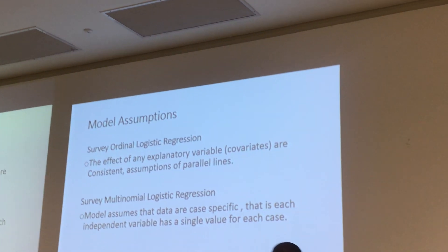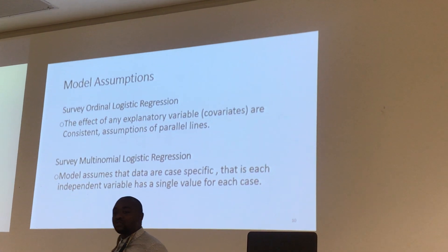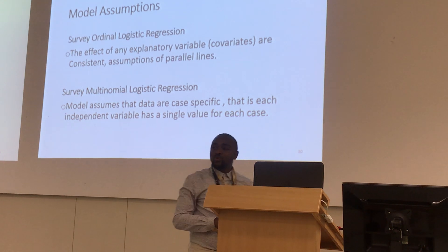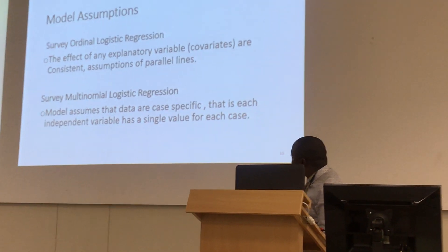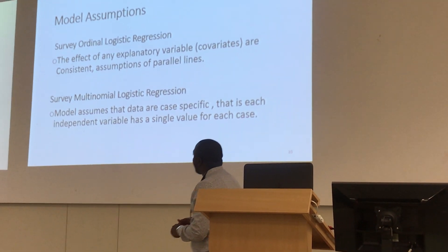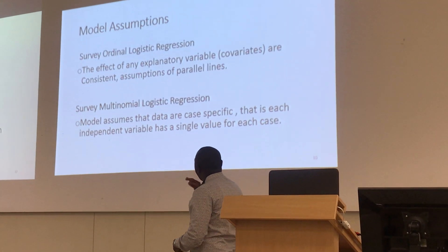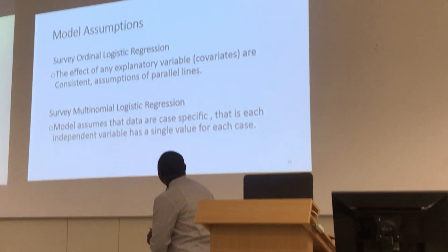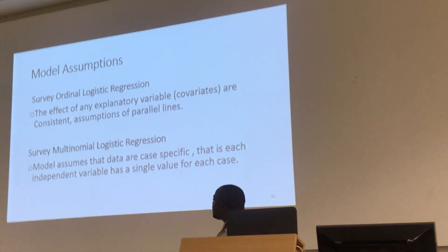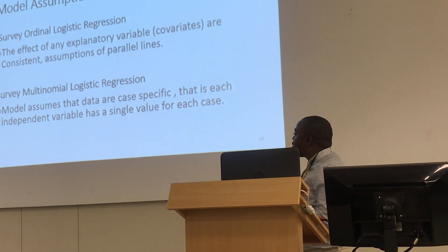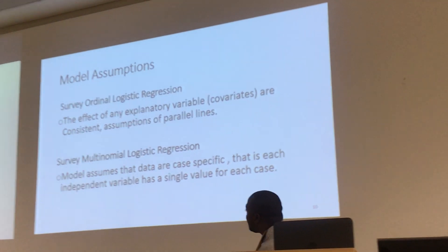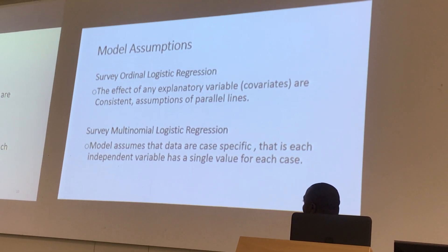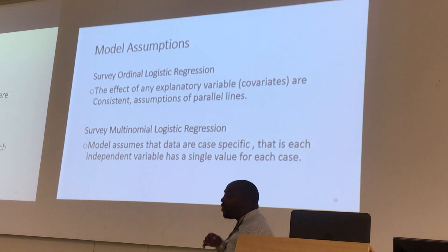Before using a model, you need to take into account its assumptions. The assumption of the survey ordered logistic regression is that the effects of any explanatory variable are consistent, and it also takes into consideration the assumption of parallel lines. The survey multinomial logistic regression assumes that data are case-specific — that is, each independent variable has a single value for each case.